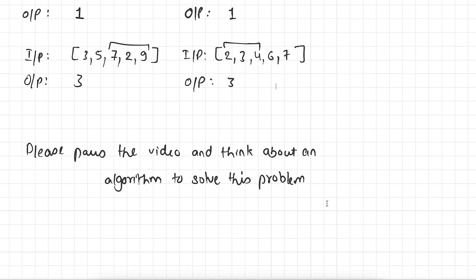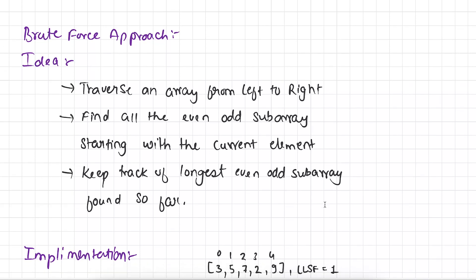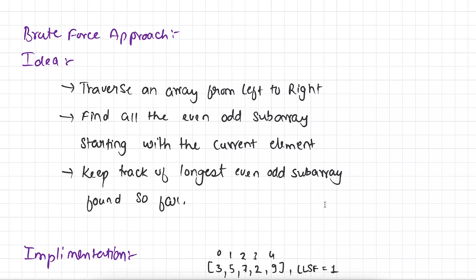By now I hope you understand this problem really well. So let's pause this video and think about an algorithm to solve this problem. I hope by now you would have written at least a basic program. So let's talk about the brute force approach. The idea of the brute force approach is pretty simple — we simply traverse an array from left to right, find all subarrays starting with the current element, and keep track of the longest even-odd subarray found so far.